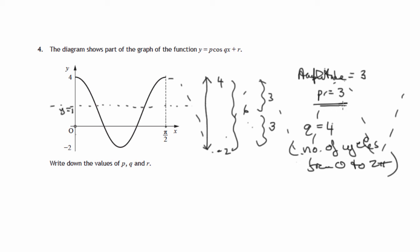So P is 3, q is 4. And finally R, this is how far up or down has an original cosine graph gone. The original cosine graph, the mean line would have been the x-axis. We've actually moved that mean line up 1, so R would be 1. Cosine graph moved up 1 unit, so R equals 1.